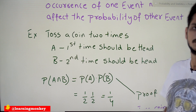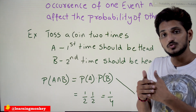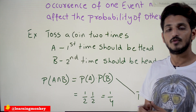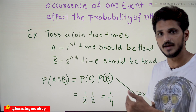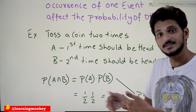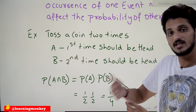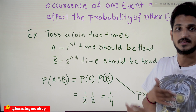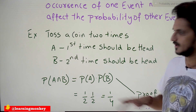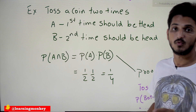When you toss a coin the first time, the probability of getting a head is 1/2. When you toss the coin the second time, the probability of getting a head is also 1/2. The first event does not affect the probability of the second event — that's why these two are independent events.